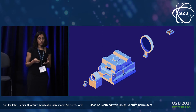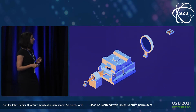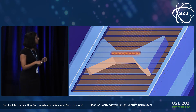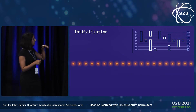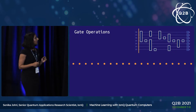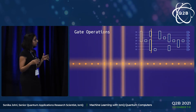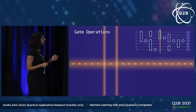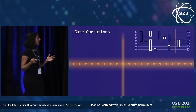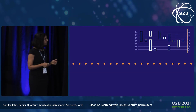IonQ is a trapped ion quantum computing company. Our qubits consist of ions that are trapped by an electric field on top of a trapped ion chip. The quantum computation is done with the help of lasers. At the beginning of the computation, the qubits are initialized in the zero state by a laser. The computation consists of several gates that form a quantum circuit, executed by lasers acting on the target qubits. At the end, the qubits are projected into a classical zero-one state, and this readout is done by a laser beam.